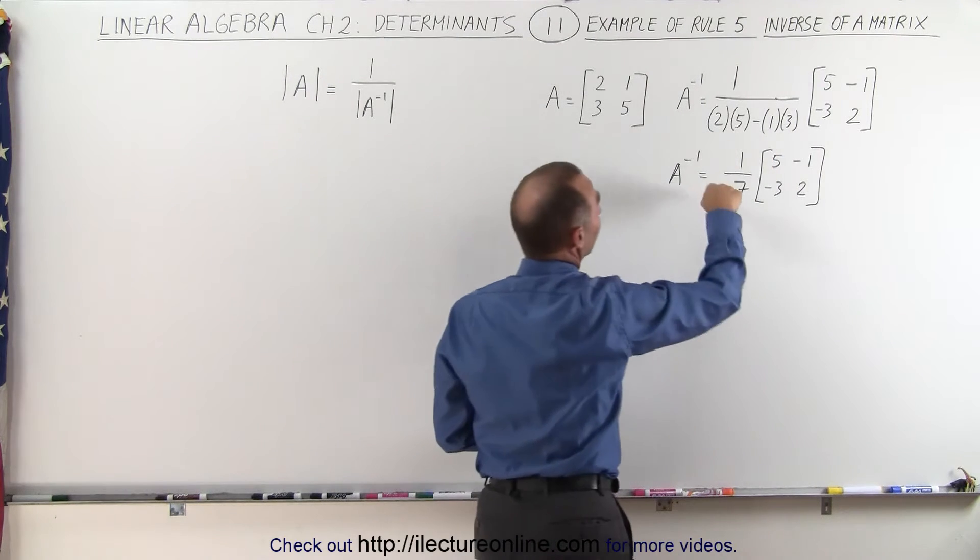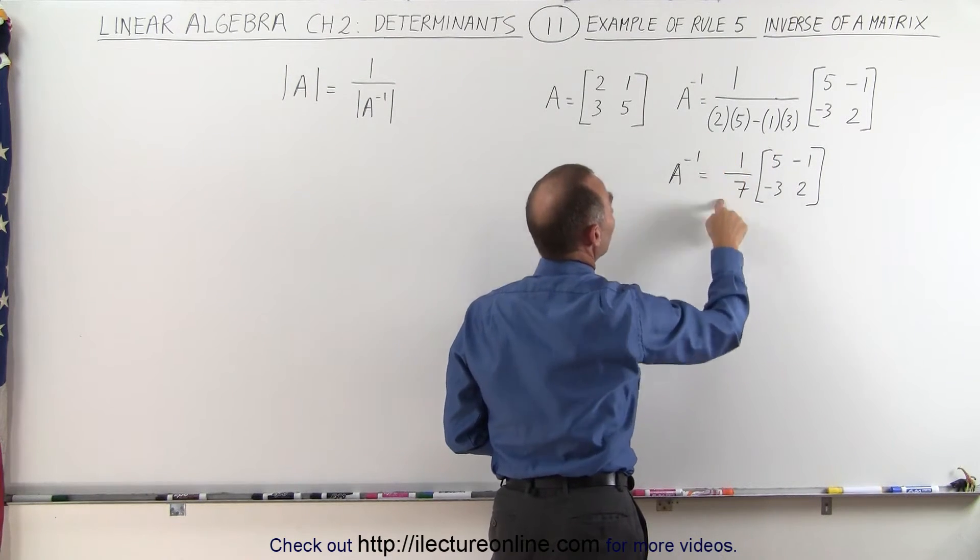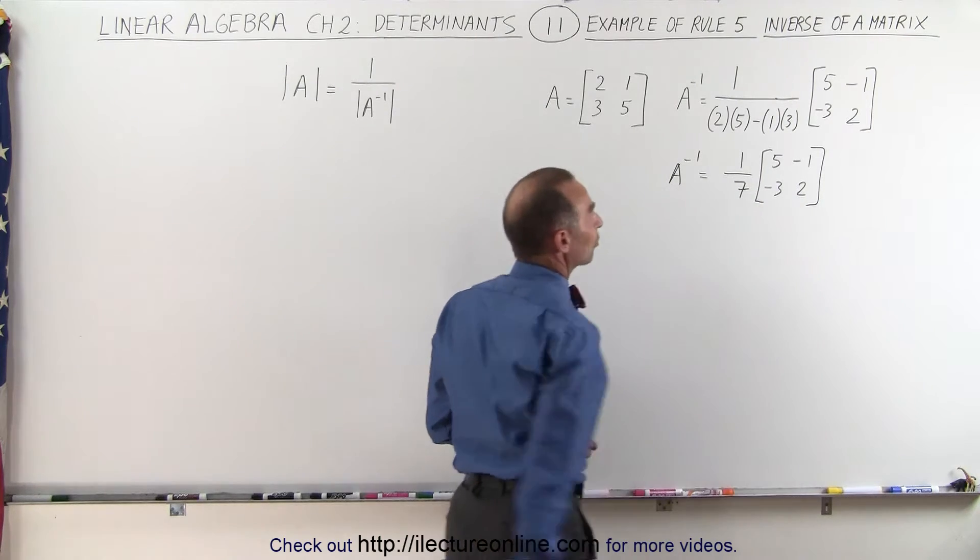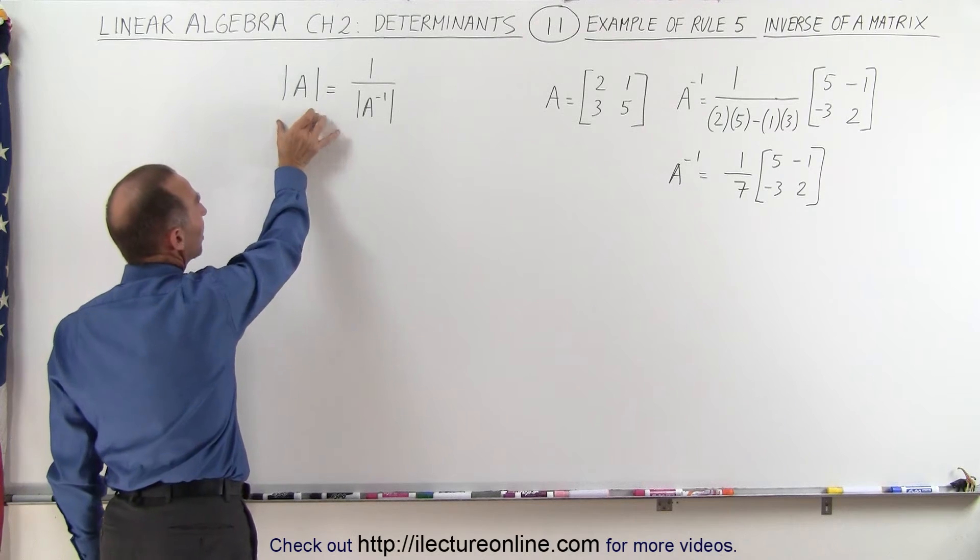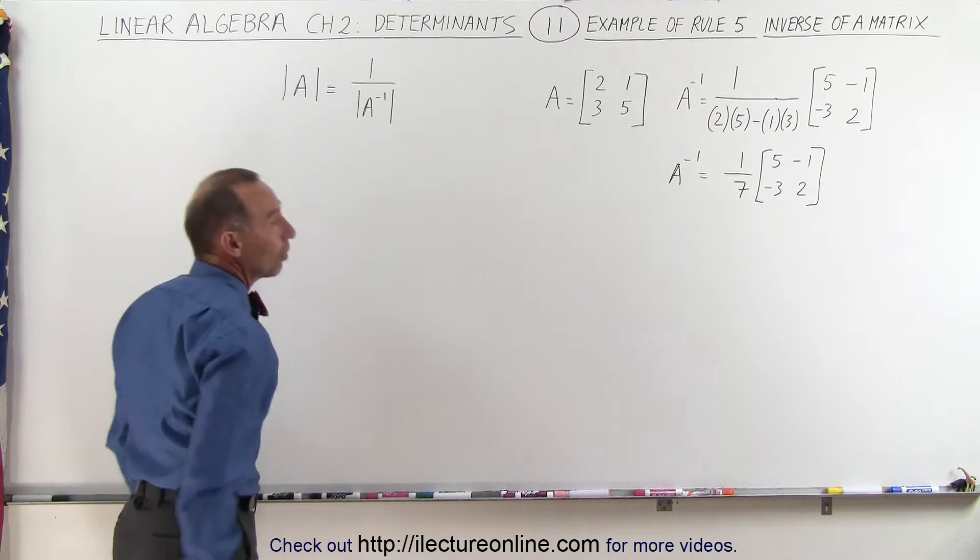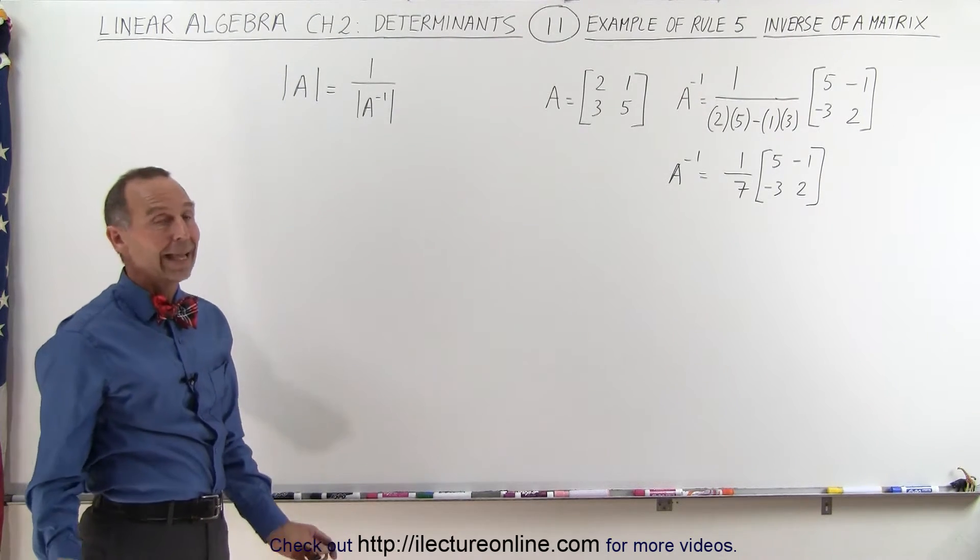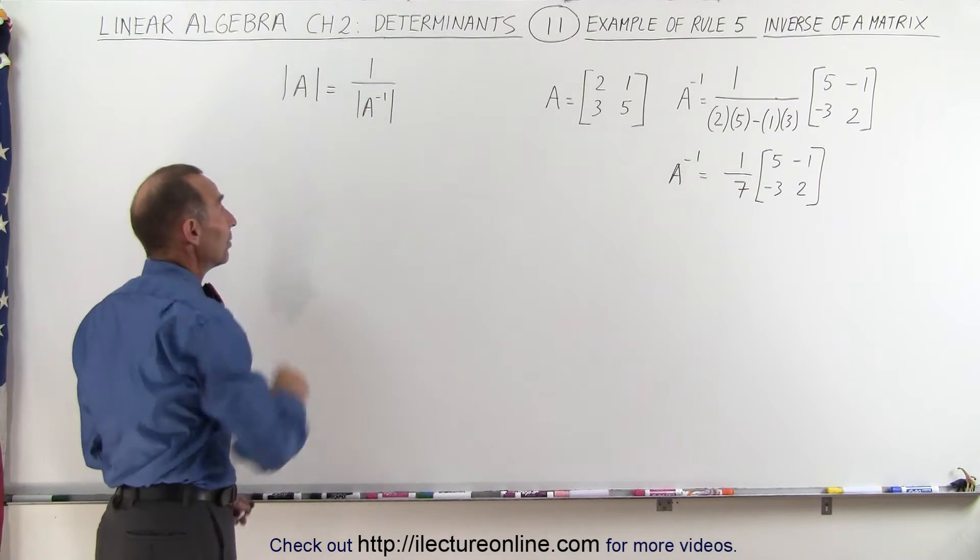If you simplify this, the inverse of matrix A equals 1 over 7 times this matrix right here. Now we're going to take the determinant of matrix A and the determinant of the inverse of matrix A and then see if this is indeed correct.